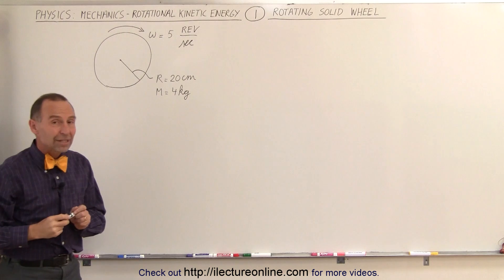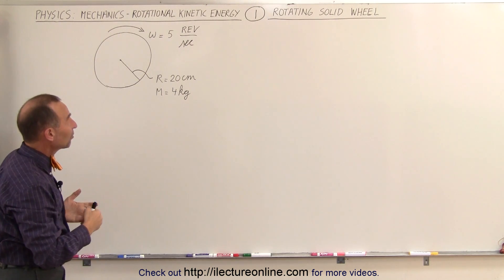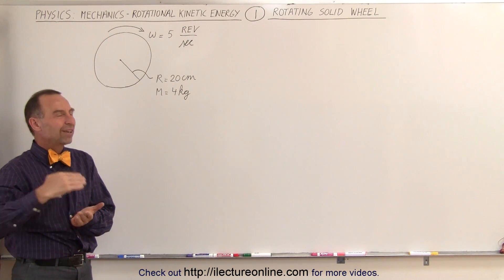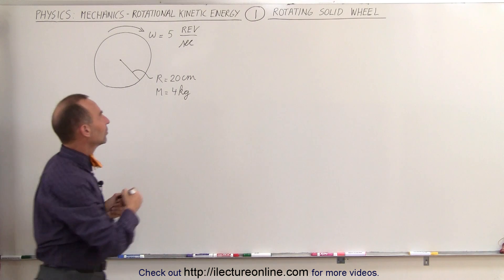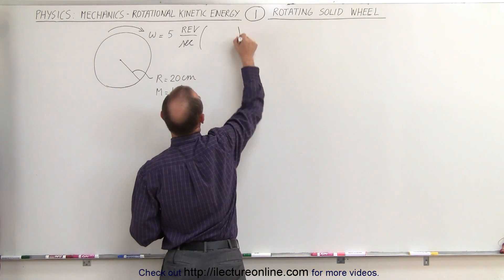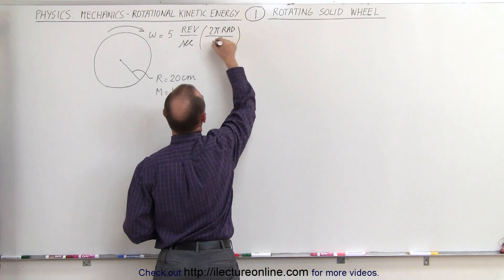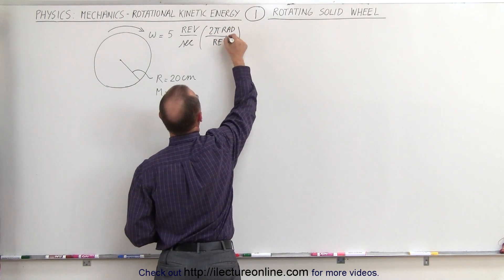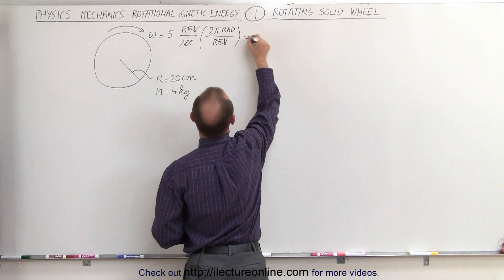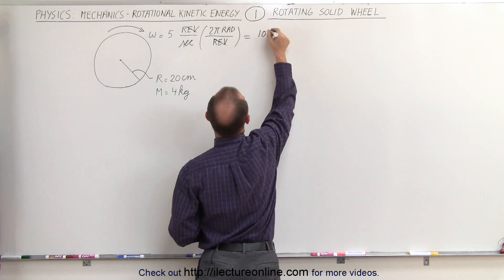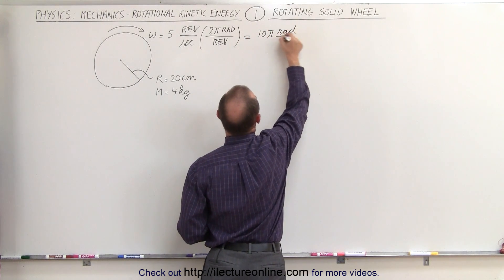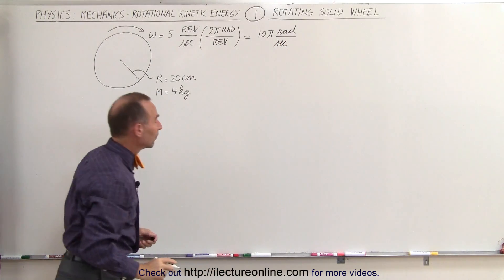The first thing we should do is if the angular velocity is expressed in revolutions per second, we should translate it to radians per second. The translation is that there are 2π radians for every one revolution. Notice the revolutions cancel out, so we end up with 10π radians per second as the angular velocity expressed in radians per second.